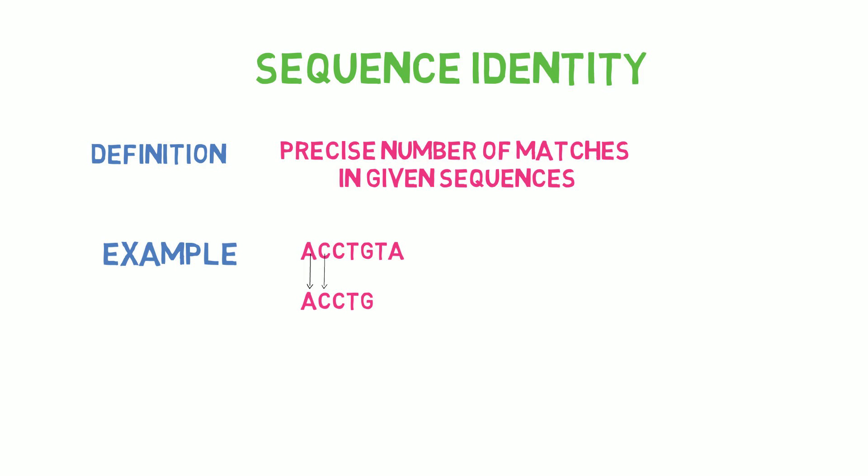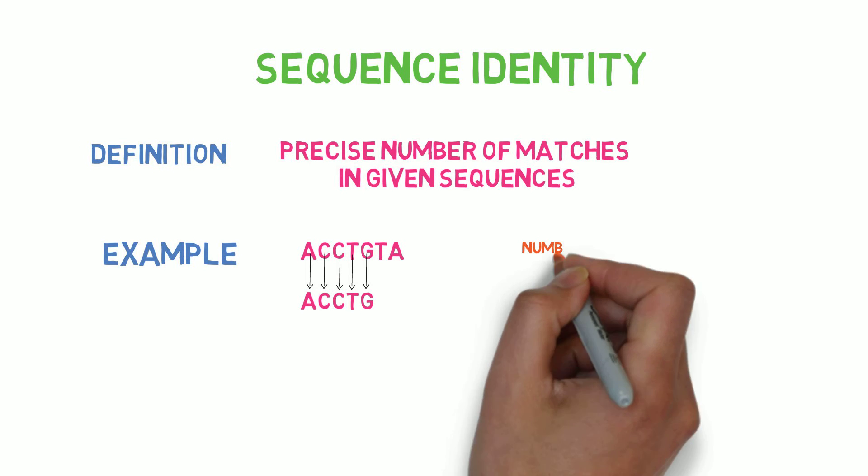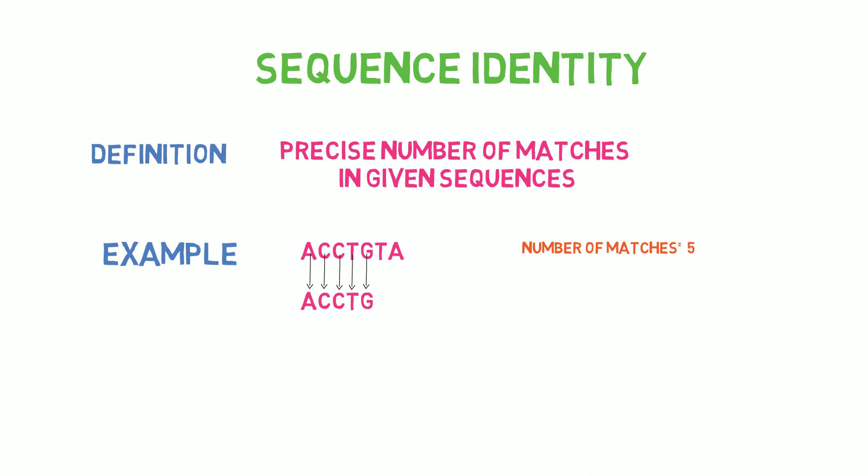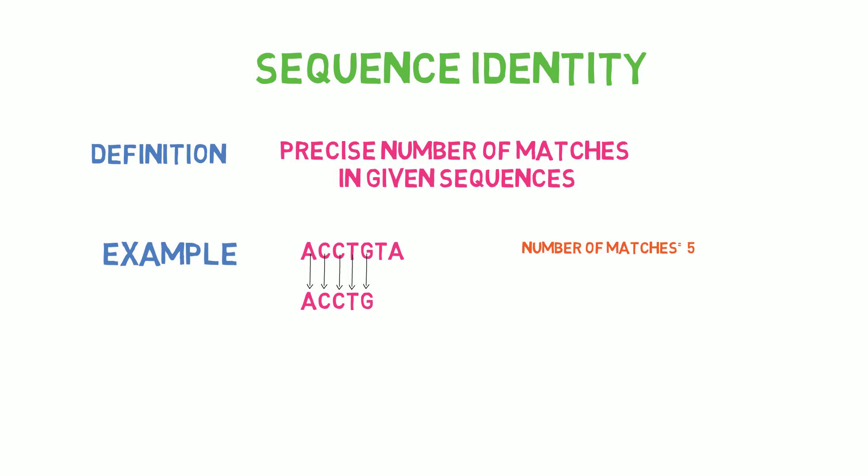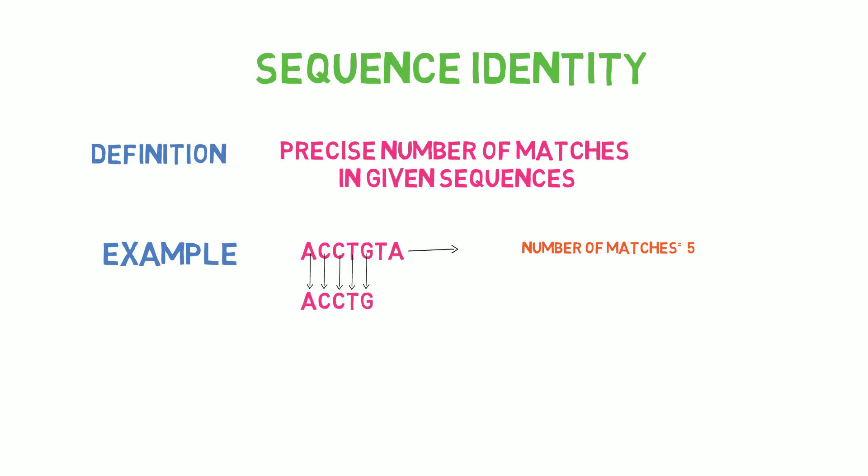First, determine the total number of matches. In this instance, there are five matches. Find the sequence with the shortest length next. Simply count the number of nucleotides in sequence 1 and sequence 2. Sequence 1 has 7 nucleotides, while sequence 2 only has 5.